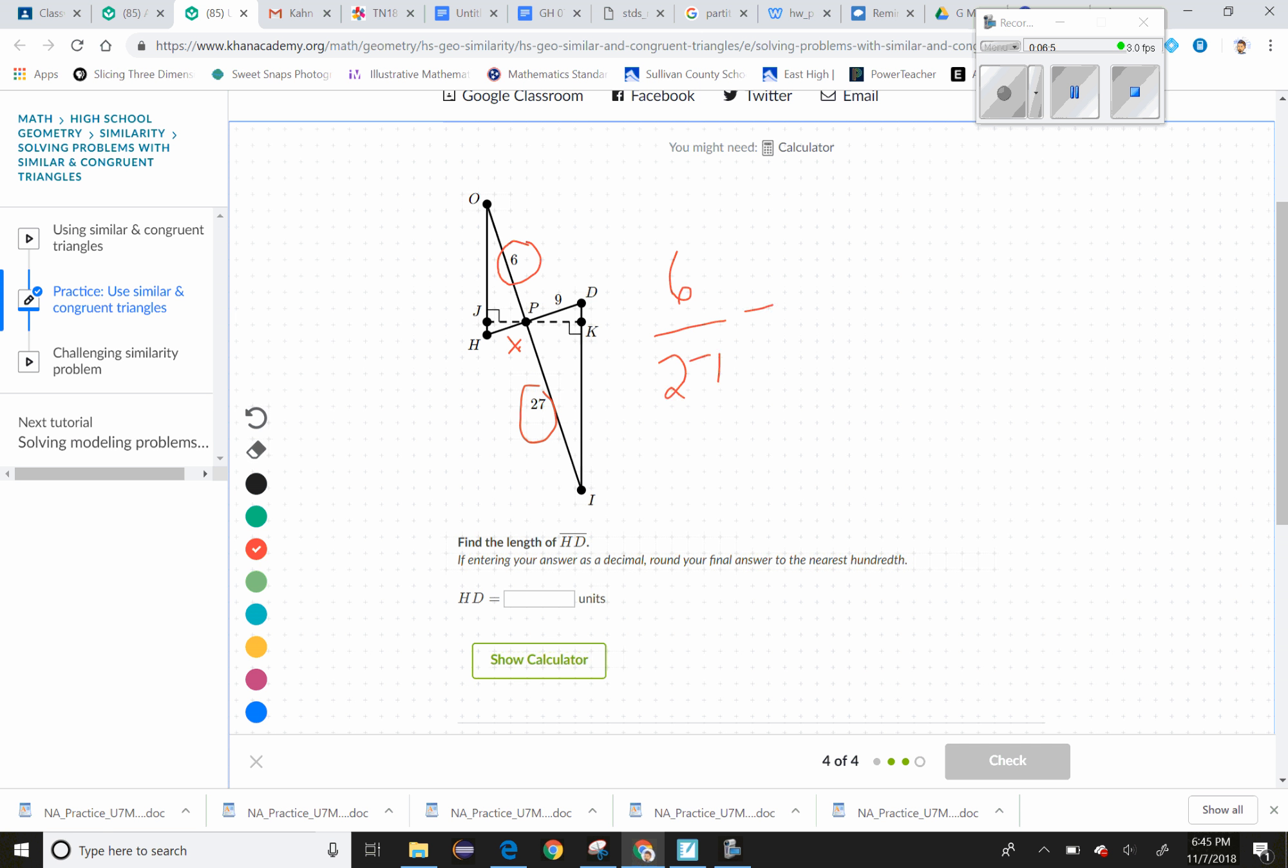has to equal X over 9. Kind of lucked out on this one. So 27X equals 6 times 9, which is 54. So X is gonna be 2—you divide both sides by 27. So if X equals 2...